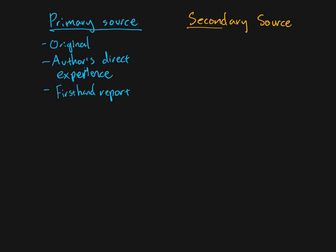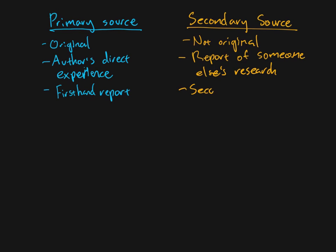Now the other possibility is that it's a secondary source, and hopefully you can already see where this is going. Secondary source is not original. This is not where the information originally came from. In other words, it is a report, the author of the article is reporting on someone else's work. So it's a report of someone else's research, or someone else's ideas or theory. In other words, it's secondary. It's a reproduction of something that was originally from elsewhere. Another way of putting this is it is a second-hand report.